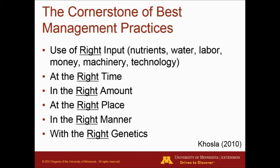The cornerstone for nutrient management or best management practices is: the right input—whether it's manure, nutrients, water, etc.; the right time—apply when the crop will be using those nutrients; the right amount—know how much the crop is going to use and don't over-apply nitrogen or phosphorus; the right place—where sensitive features and setbacks come into play; the right manner—whether you incorporate, inject, or surface-apply and later incorporate; and even the right genetics, as some corn varieties may have different nutrient uptake characteristics.